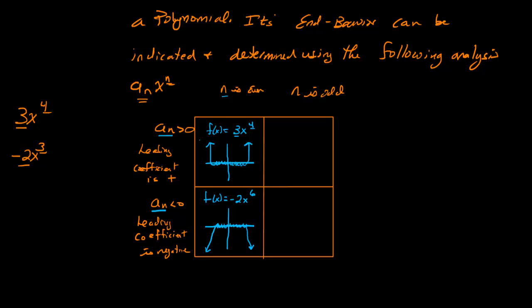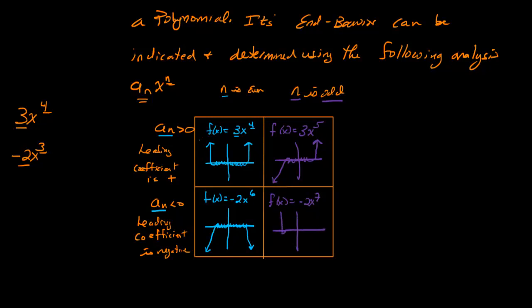When the exponent is odd and the leading coefficient is positive — for example f(x) = 3x⁵ — we start in quadrant three and end in quadrant one. When the exponent is odd and the leading coefficient is negative — for example f(x) = -2x⁷ — we start in quadrant two and end in quadrant four, flipped about the x-axis.